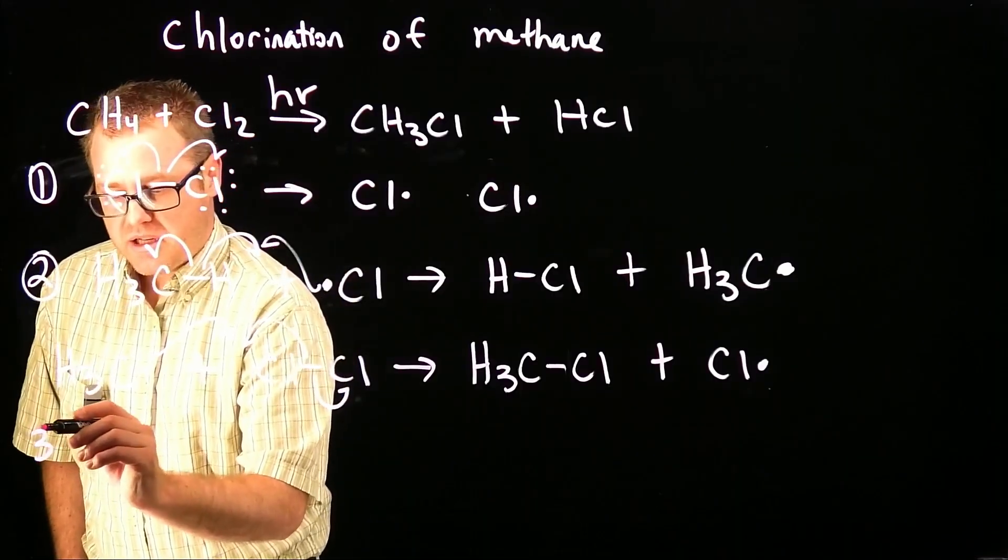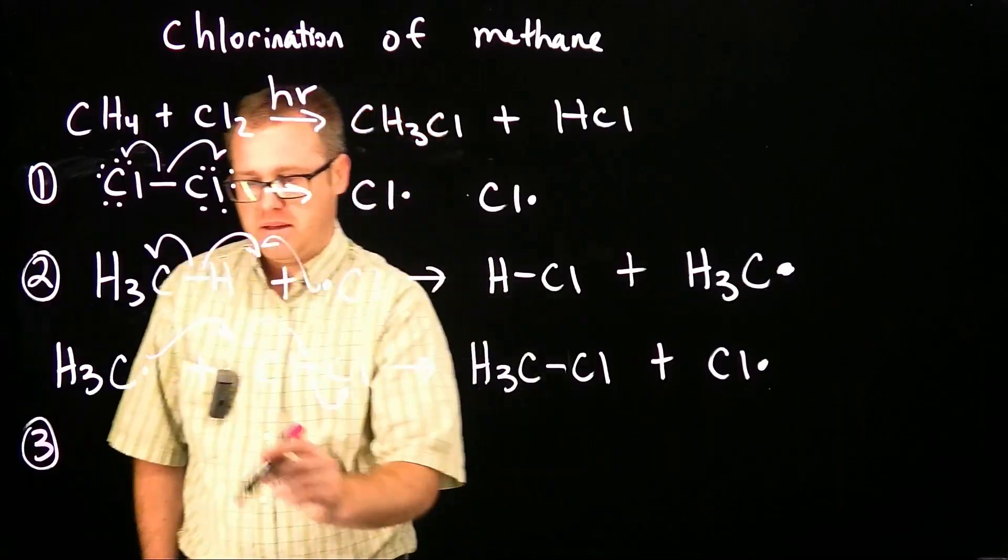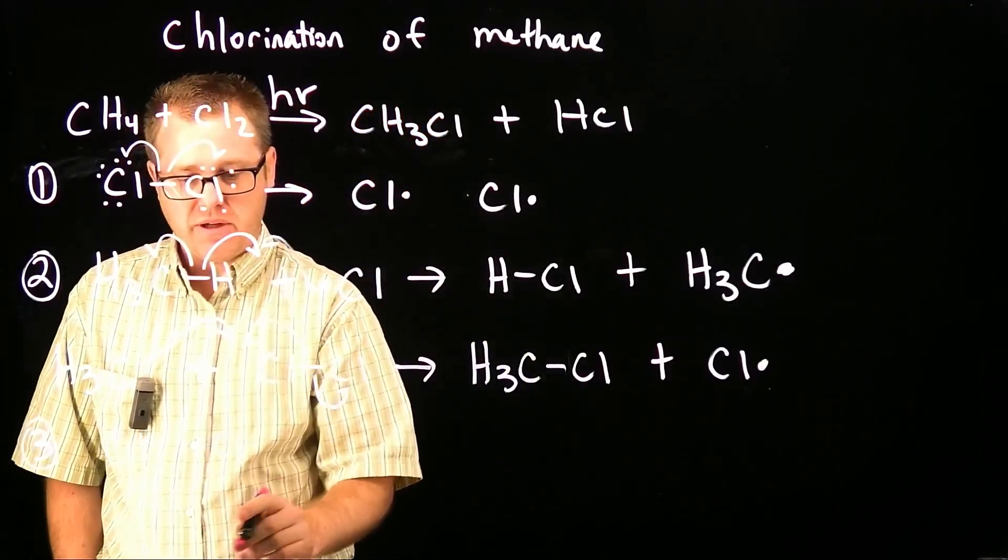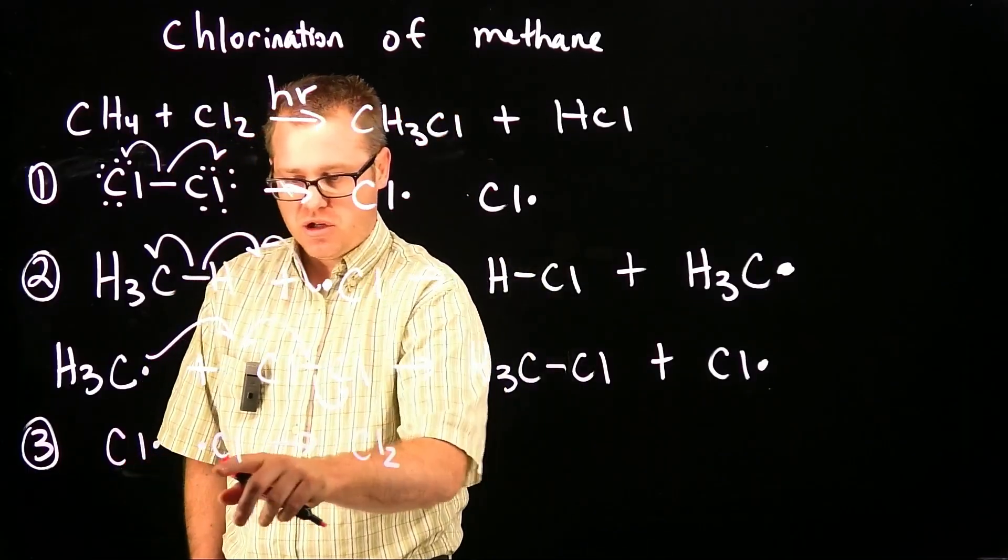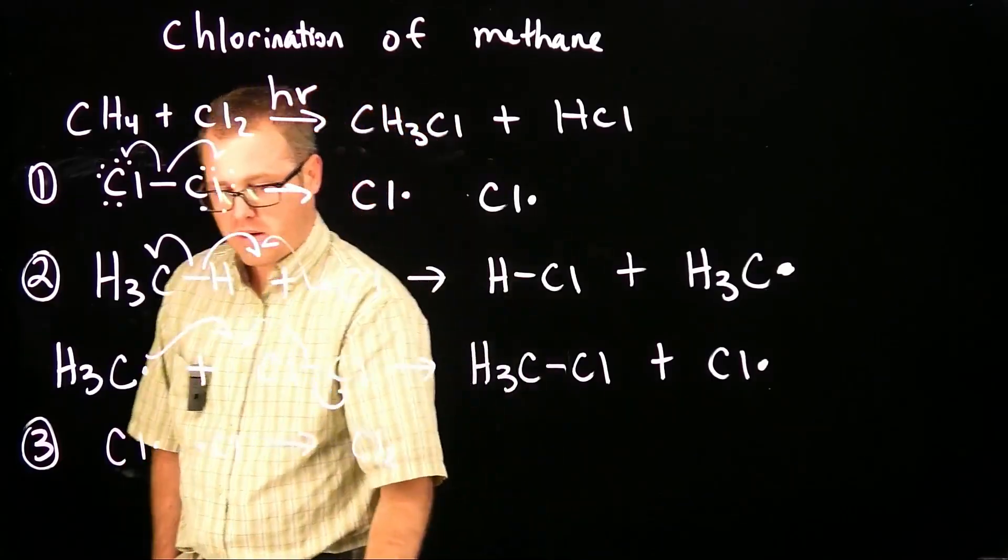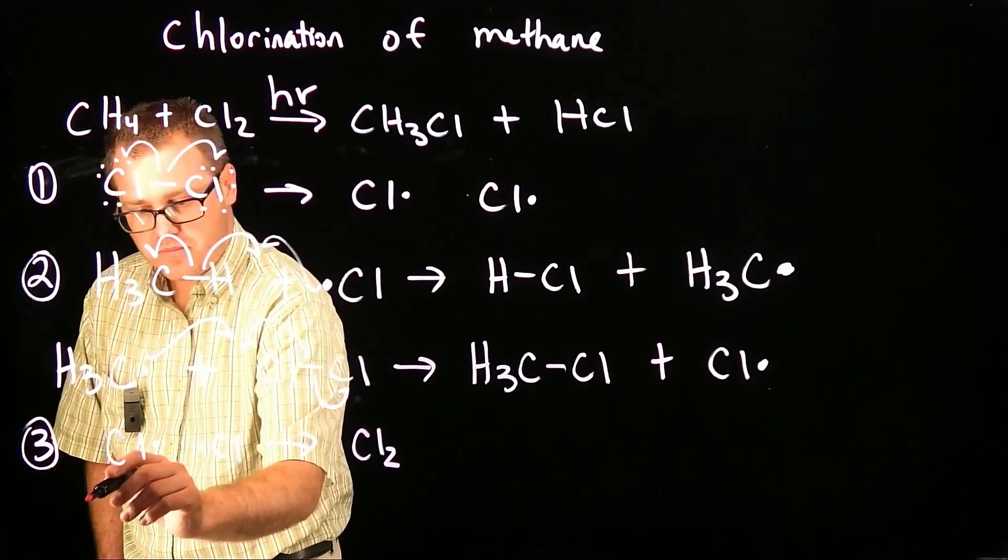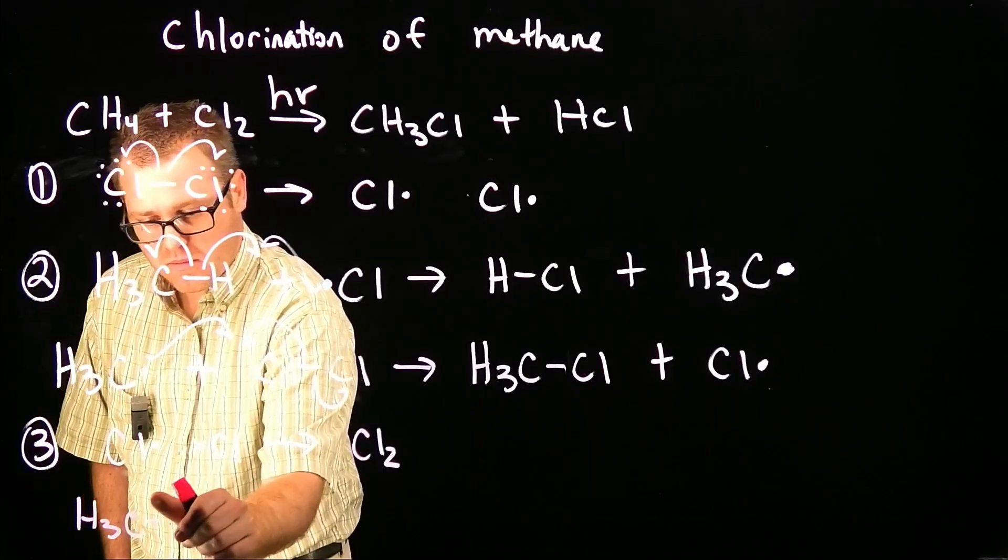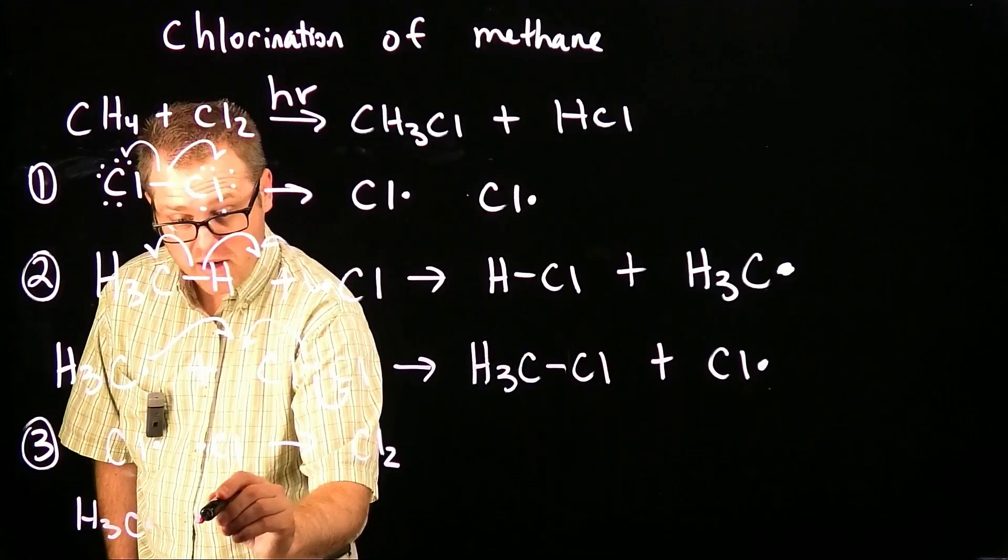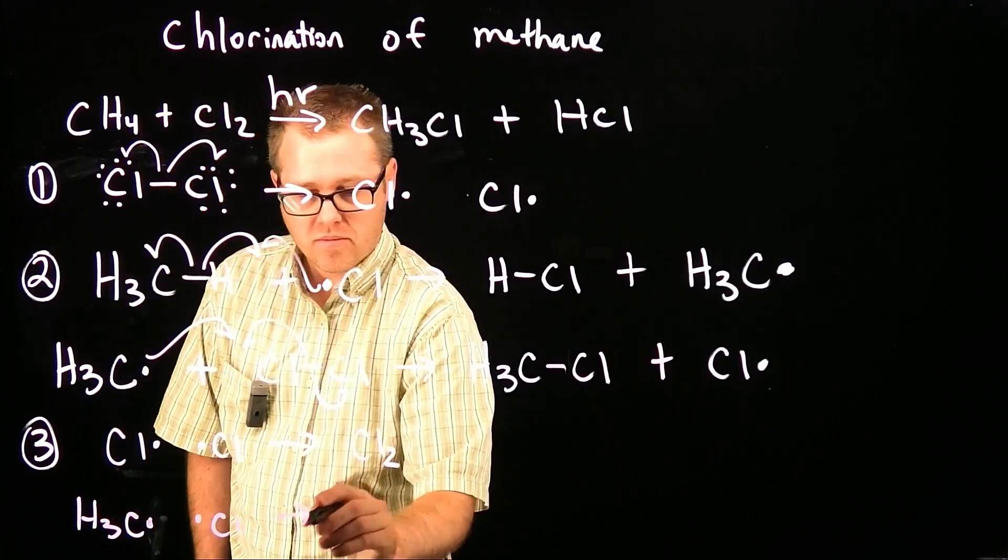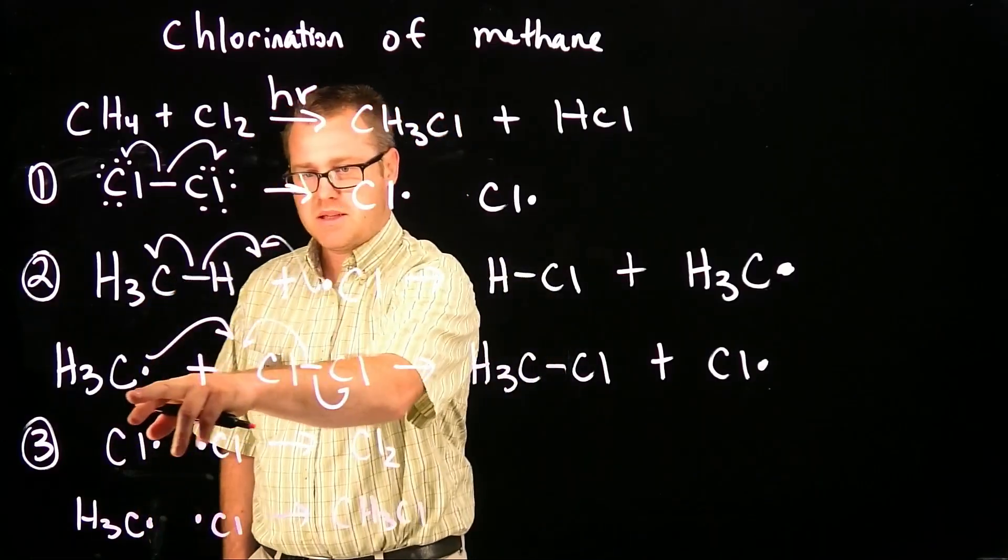For the reaction to stop, or the termination step, we have to get no more radicals. There's three ways that this can happen. You can have two chlorine radicals get real close to each other, and that will turn back into chlorine. That will stop the reaction because you can see two radicals reacting, and now in the product there's no more radicals. That's one possibility.